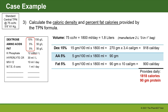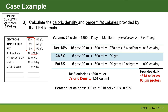To calculate caloric density, take 1,818 calories divided by 1,800 mL = 1.01 calories per mL. To get percent fat calories, take fat calories of 900 divided by total calories of 1,818 × 100% = 50% fat calories.